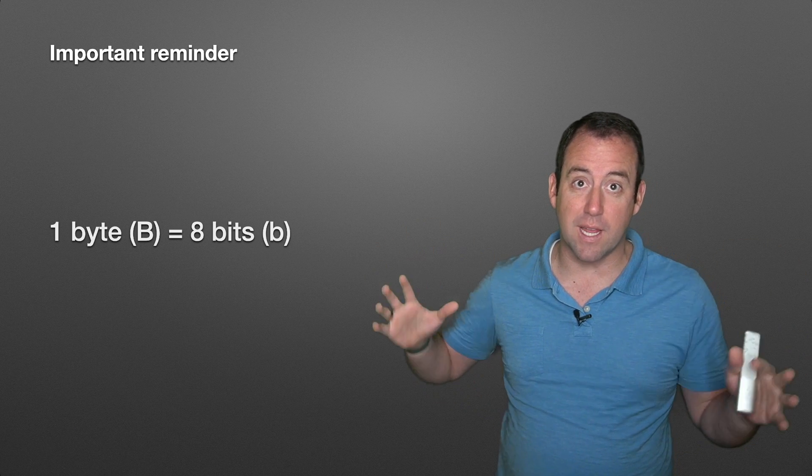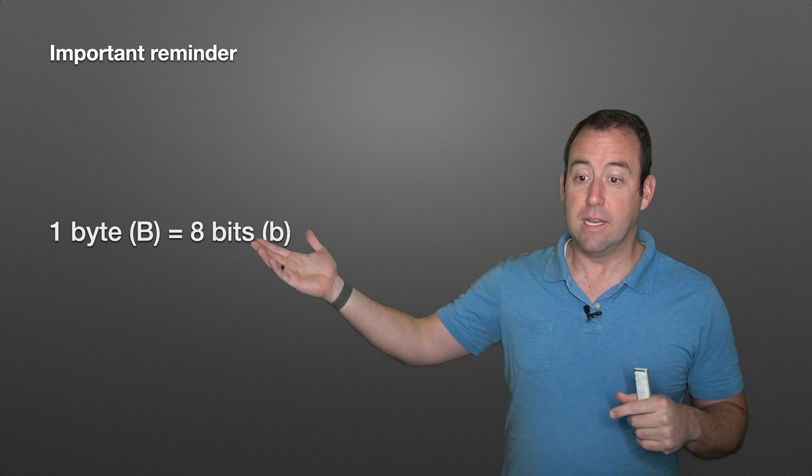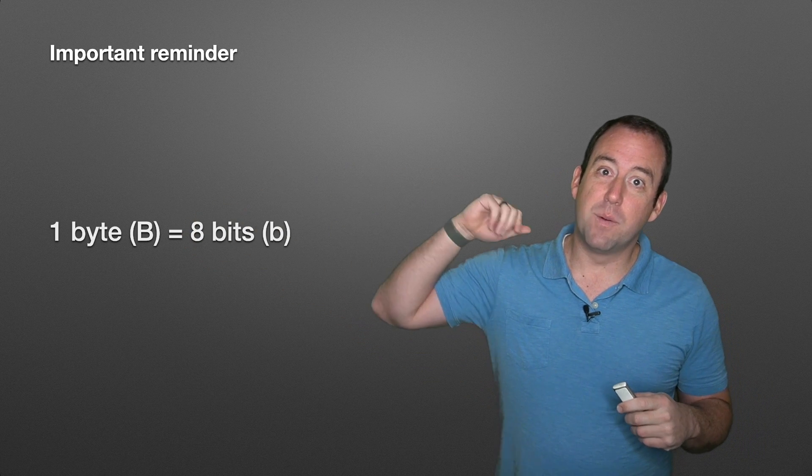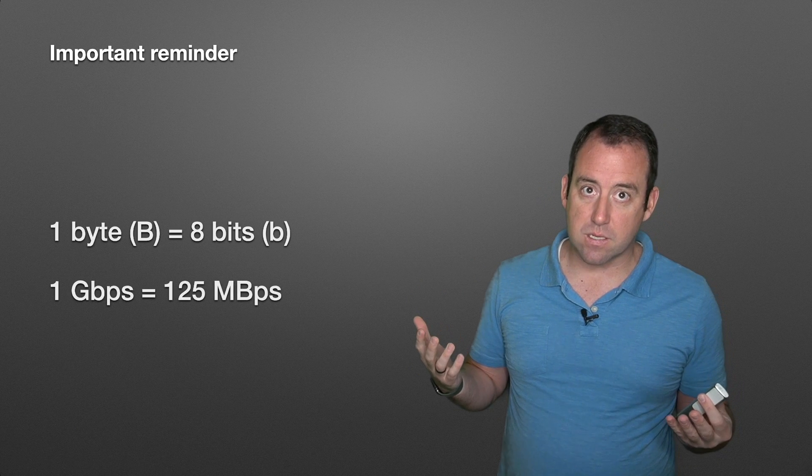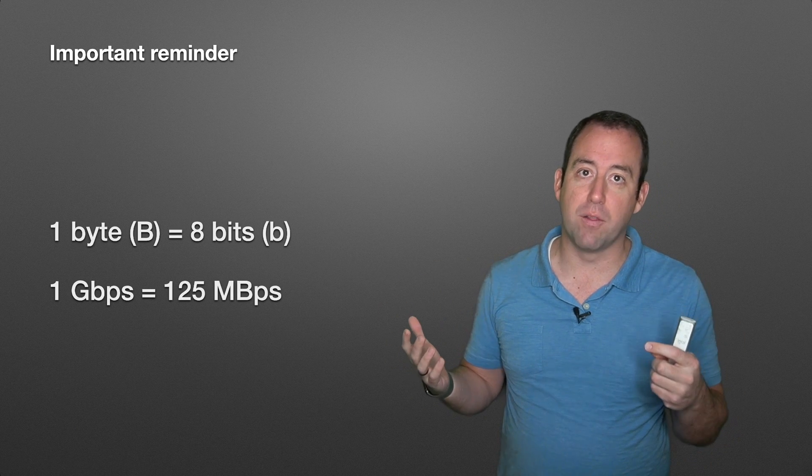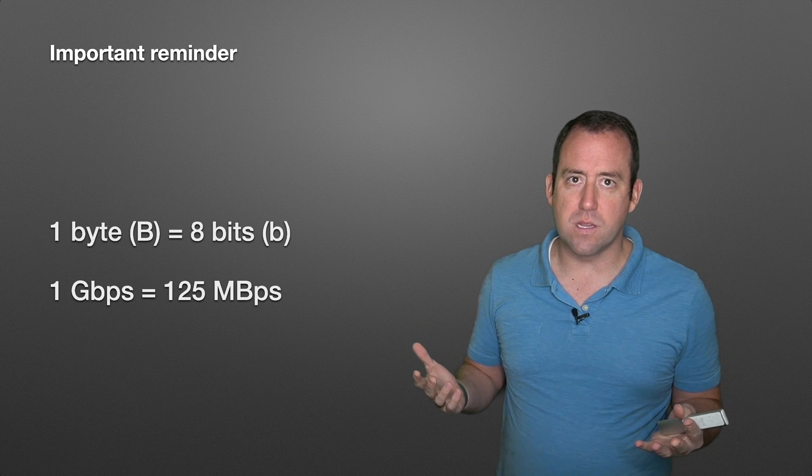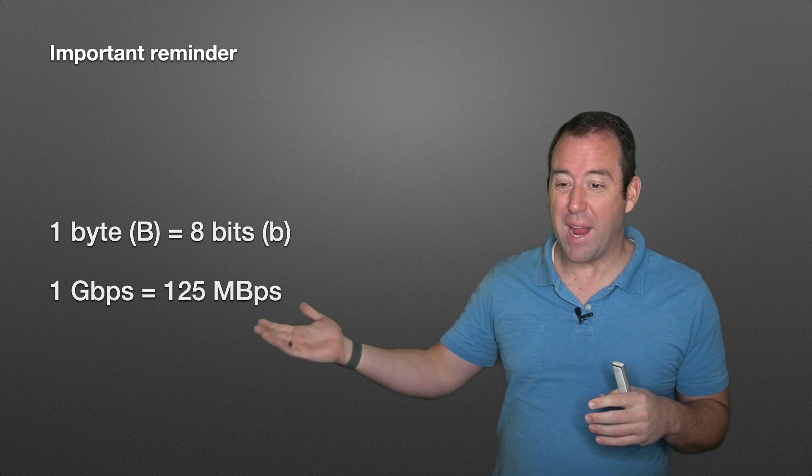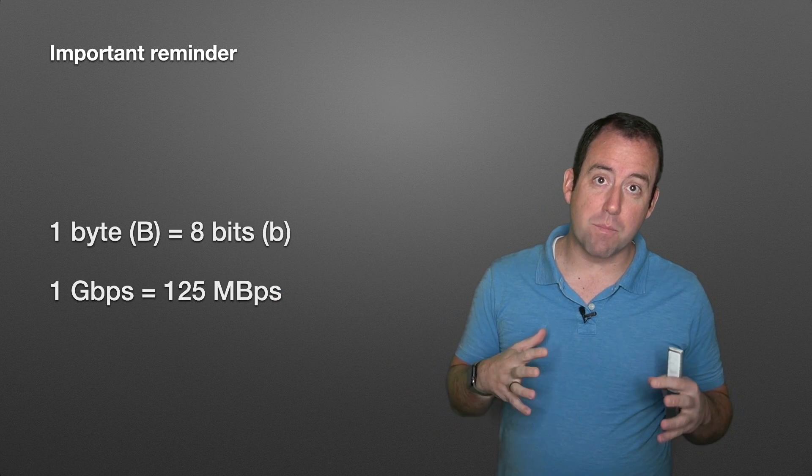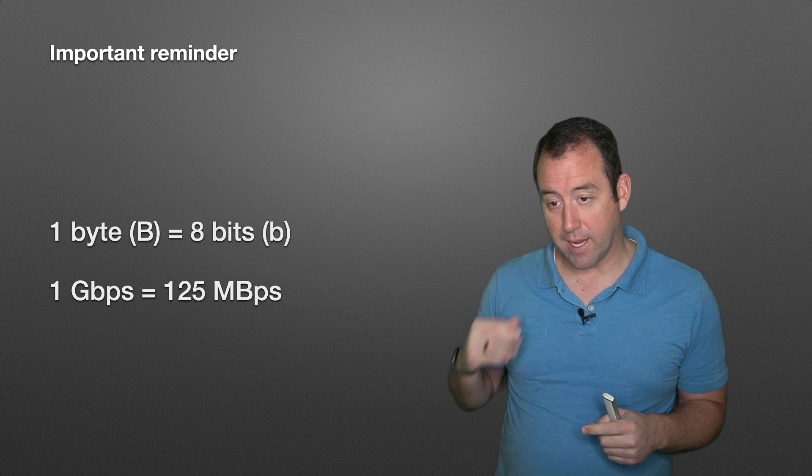So all of the speeds, the bits per second that we've been talking about is bits, not bytes. But often you will see your computer reporting times in bytes per second. So when you're downloading a file, it's often reported to you in how many bytes per second. So just remember that a byte is eight bits. So if you multiply the bytes per second times eight, you'll get the bits per second.